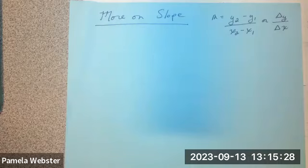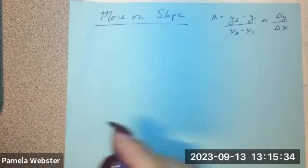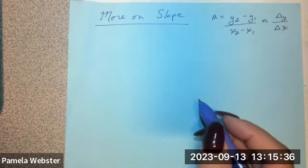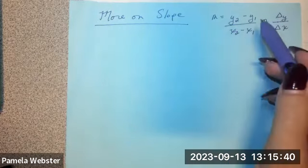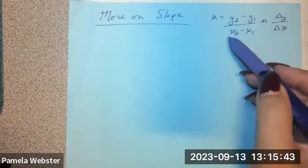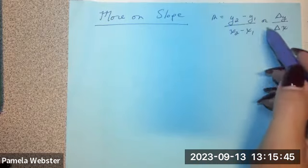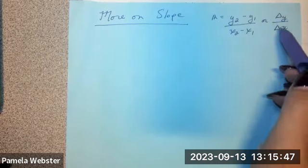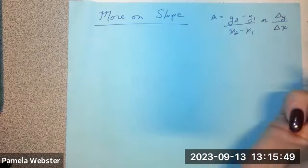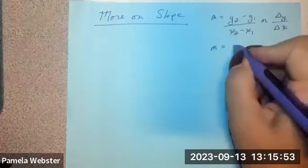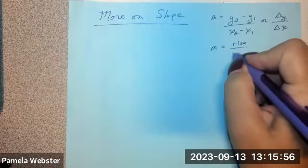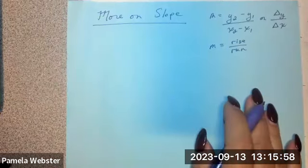All right, everybody, we are going to go just a little bit more in depth on slope than what we've done this last video. This should be relatively short, but I want to make sure that everybody remembers when we talked about slope last time, we said it was y sub 2 minus y1 over x2 minus x1. Or you might see delta y over delta x, where delta means the change in y over the change in x, and in that case, it is directional, so positives and negatives have meaning.